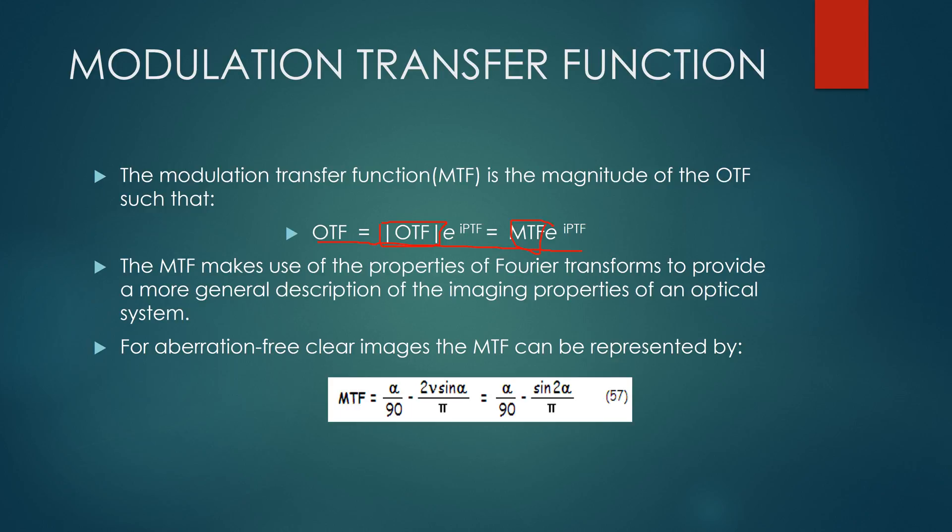So recapping, we used the Fourier transform on the point spread function to get the optical transfer function. And then we used its magnitude and that is how we got the modulation transfer function. Now the modulation transfer function can be used to give a description of the imaging properties of an optical system.